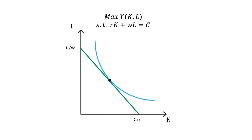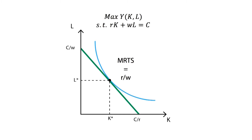The combination of inputs that maximizes production while complying with the budgetary constraint will be composed of the equilibrium amount of capital and the equilibrium amount of labor. At this point, the marginal rate of technical substitution, which is equal to the slope of the isoquant, will be equal to the interest rate divided by the unitary wage paid, which corresponds to the slope of the isocost line.